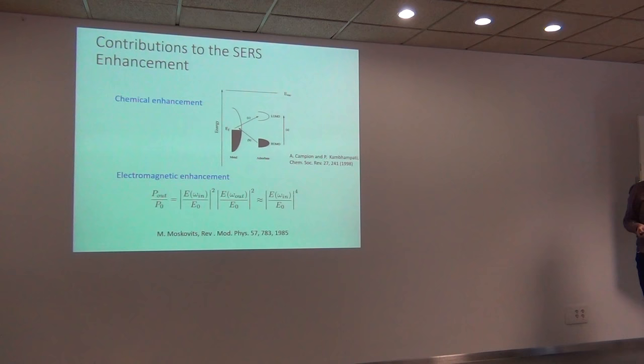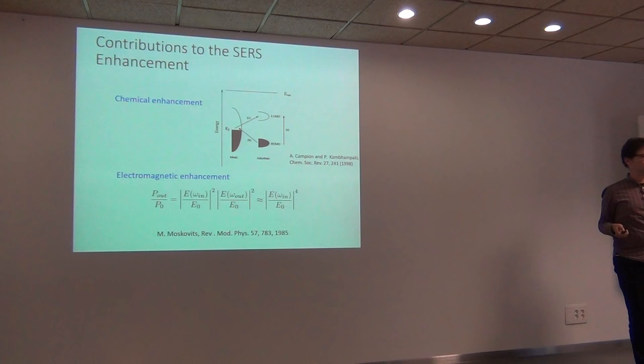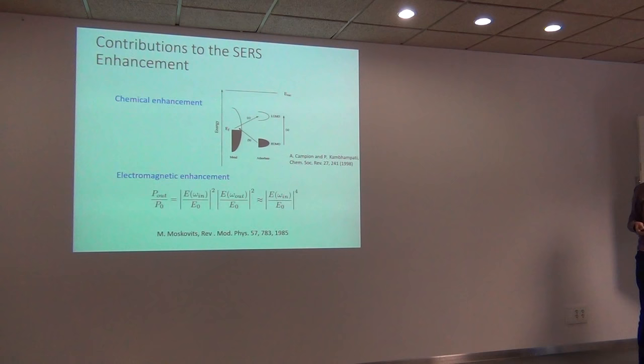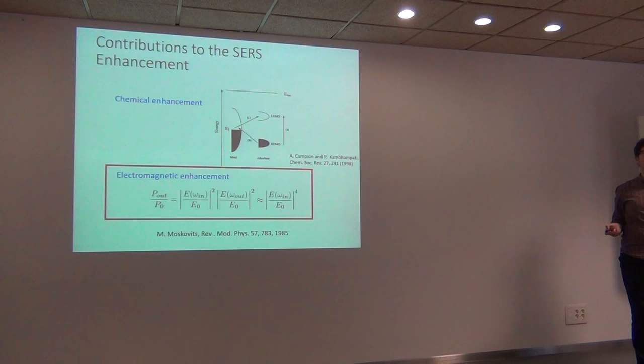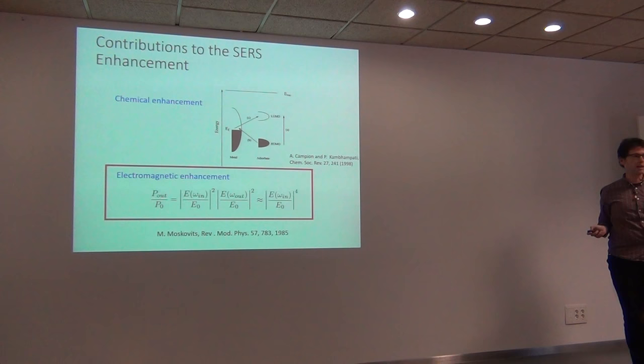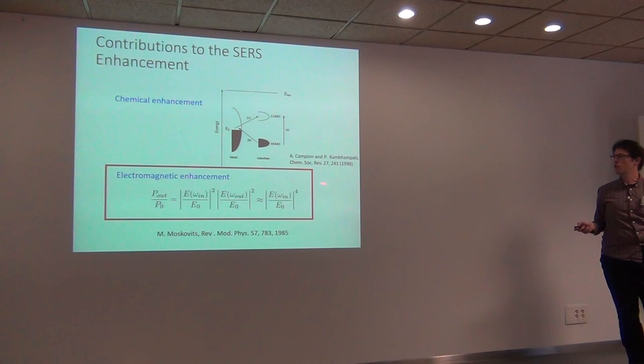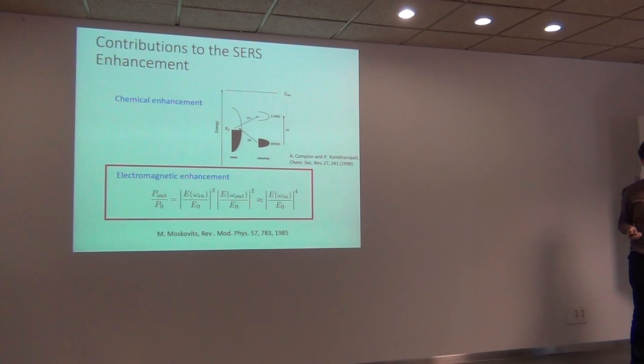When discussing this enhancement, one usually considers two contributions. The first is the chemical enhancement — for example, when a molecule is next to a metal, electronic densities can move and the molecule's cross-section changes. I'm not going to discuss this as I'm not an expert. What I'll focus on is the electromagnetic enhancement, which is generally accepted as the main one. If you have worked with SERS at all, you will know that the SERS enhancement equals the fourth power of the electric field enhancement, normalized by the incident field.